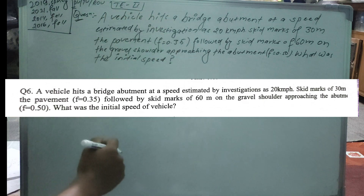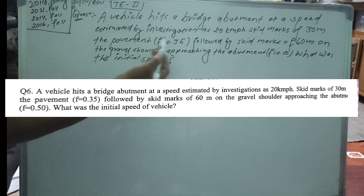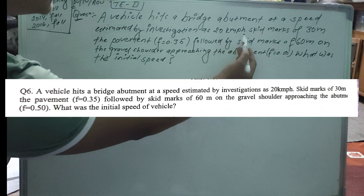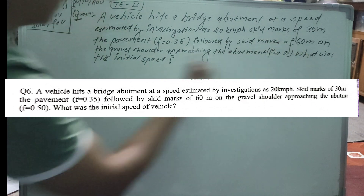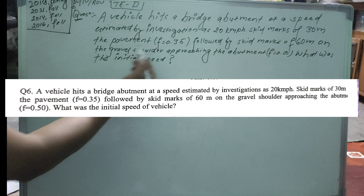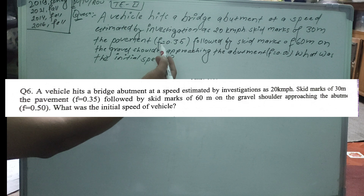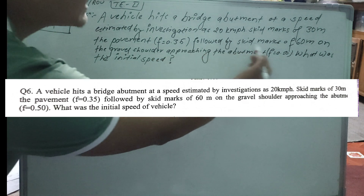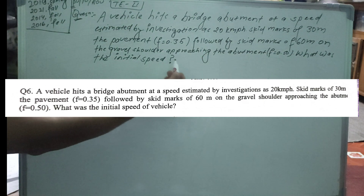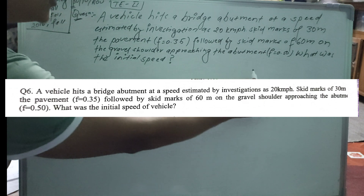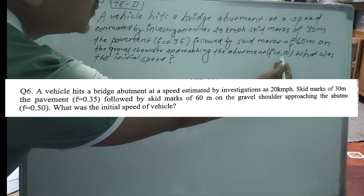A vehicle hits a bridge abutment at a speed estimated by investigation as 20 km per hour. There are skid marks of 30 meters on the pavement where the coefficient of friction F equals 0.35, followed by skid marks of 60 meters on the gravel shoulder approaching the abutment where F equals 0.5.